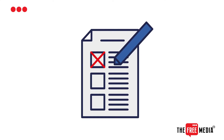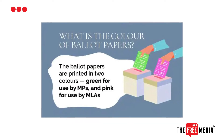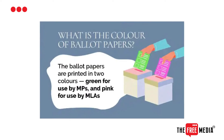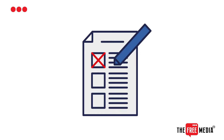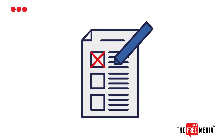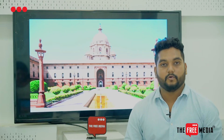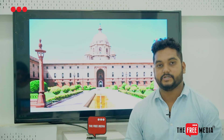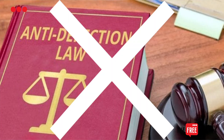Voting will be done through ballot paper and pen. MLAs will get a pink color voting sheet and MPs will get a green color voting sheet. The voting sheet consists of two columns: the name of the candidate and the preference order. No political party symbols will be mentioned on the sheet, and the anti-defection law on cross-voting does not apply to this election.